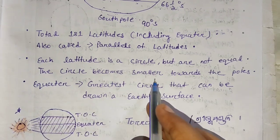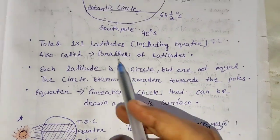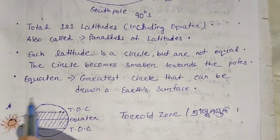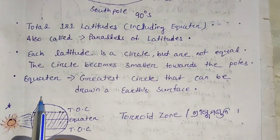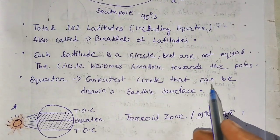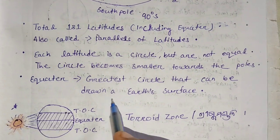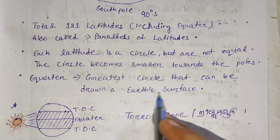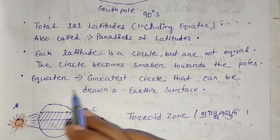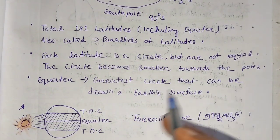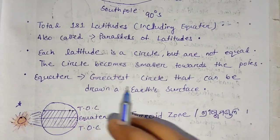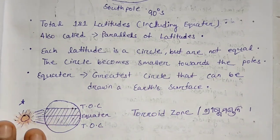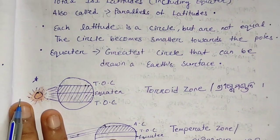The circles become smaller towards the poles and the poles are the smallest. Then the greatest circle that can be drawn on the surface is the equator. The surface's greatest circle is the equator. If you have a question about the surface, the greatest circle is the equator.